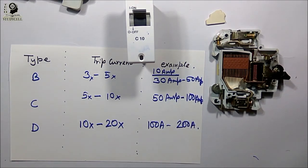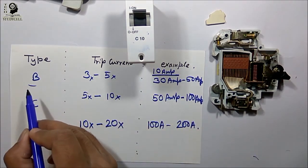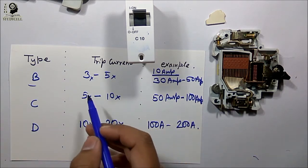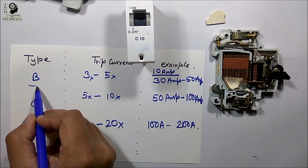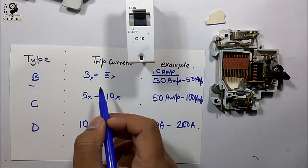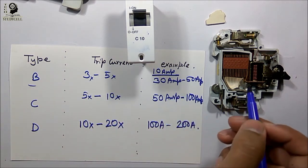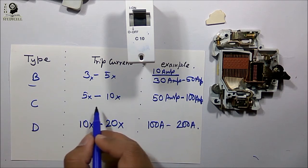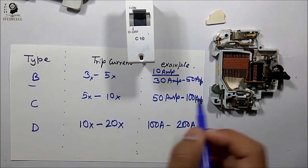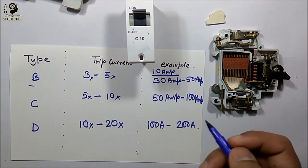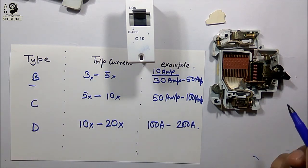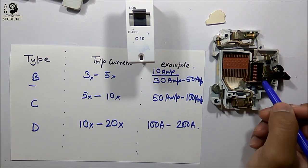Now if I supply a single phase induction motor through a B type circuit breaker, at the time of starting the motor will typically take 2 to 10 times its rated current. So B type will not be suitable for supplying a motor because it will trip instantly as the solenoid gets energized at starting. In that case we will use a C type circuit breaker, so that the solenoid will not get energized and trip the device at the highest starting current of the motor.